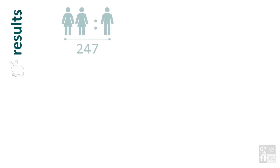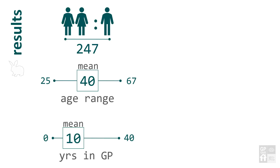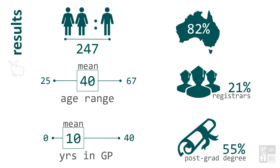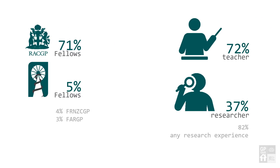247 participants completed the questionnaire, men to women two to one. The mean age was 40, with an average of 10 years working in general practice. Most received their primary medical degree in Australia; a fifth were GP vocational trainees. This was a relatively well-educated cohort, with over half having a postgraduate degree beyond their primary medical degree. 5% had been awarded a doctorate such as a PhD. Most were fellows of the Royal Australian College of General Practitioners. 72% were involved in teaching or supervision, and a third had been a researcher — for example, a primary or co-investigator, or had a higher degree by research.